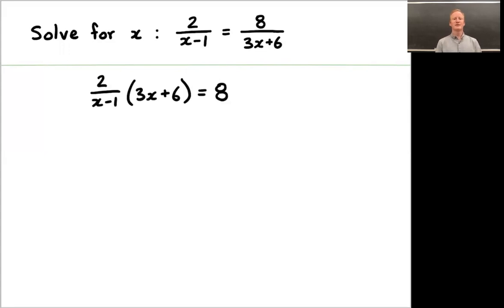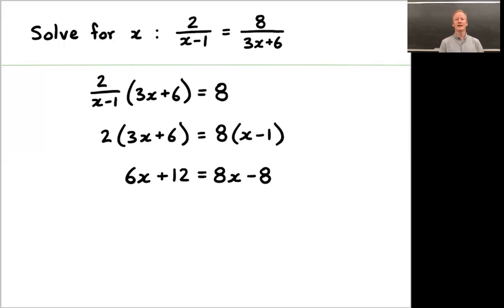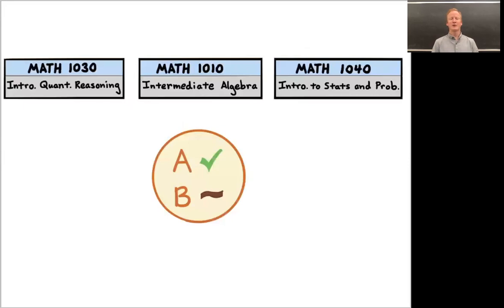Welcome back. Multiply by 3x plus 6. Multiply by x minus 1. 2 times 3x plus 6 is 6x plus 12. 8 times x minus 1 is 8x minus 8. Subtract 6x, add 8, and divide by 2. x is 10. That's the solution to this problem. I don't recall if that's our last problem. Let's check. That was our last problem.